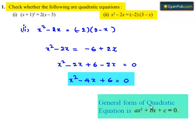We have the general form of quadratic equation as ax² plus bx plus c equals 0. If we compare this equation with the standard equation, we get a equals 1, b equals minus 4, and c equals 6.